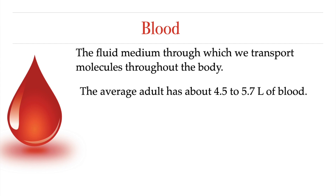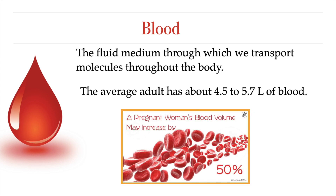The average adult should have about 4.5 to 5.7 liters of blood in their body. However, this amount can vary. This average is for adults weighing between 150 to 180 pounds. So adults who weigh less than that, and of course children, will have less blood. On the other hand, that amount can be higher for people who are pregnant.